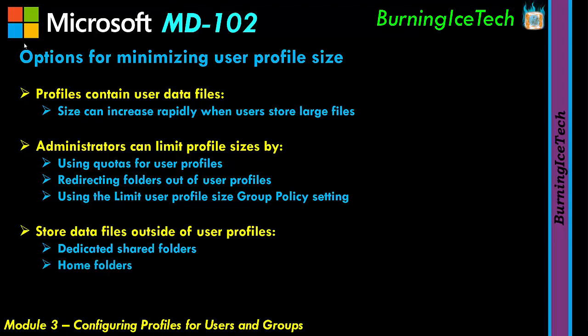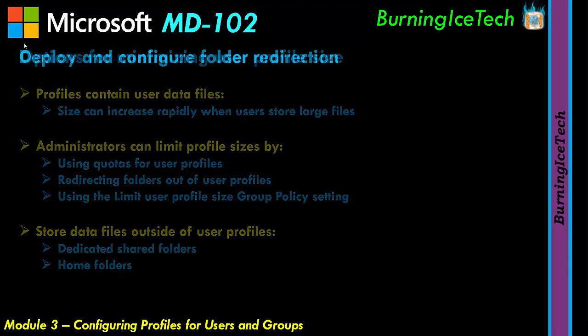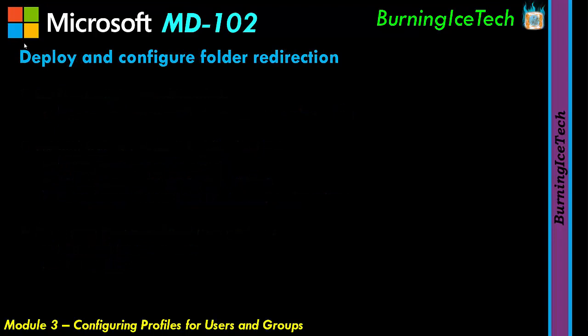The last topic in this module is Deploy and Configure Folder Redirection. For those not familiar, folder redirection generally works on-premises with machines joined to the domain. It allows users to access their data on multiple domain machines. If you log into your regular work PC every day, your files are there. But if you switch to a different domain machine, by default you won't see your data.